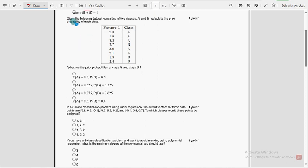Now let's see the second question. Given the following dataset consisting of two classes A and B, calculate the prior probability of each class. For second question, second option is the probable solution. P of A equals 0.65 and P of B equals 0.375.